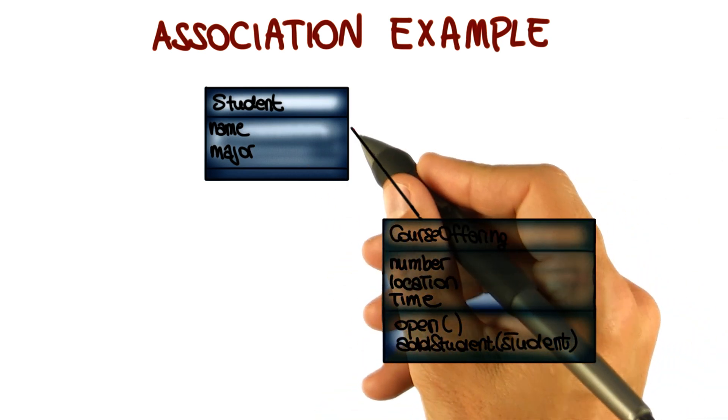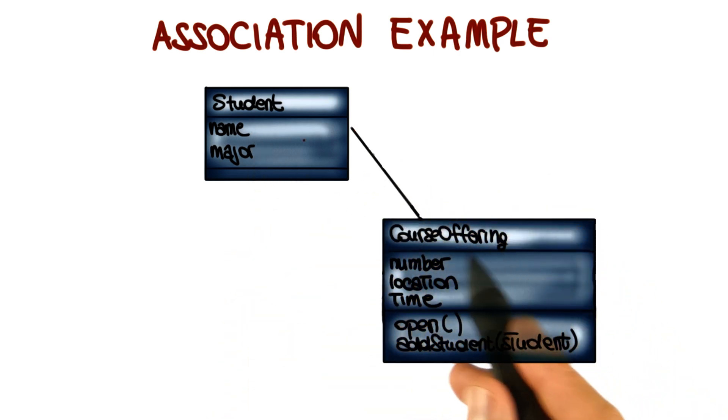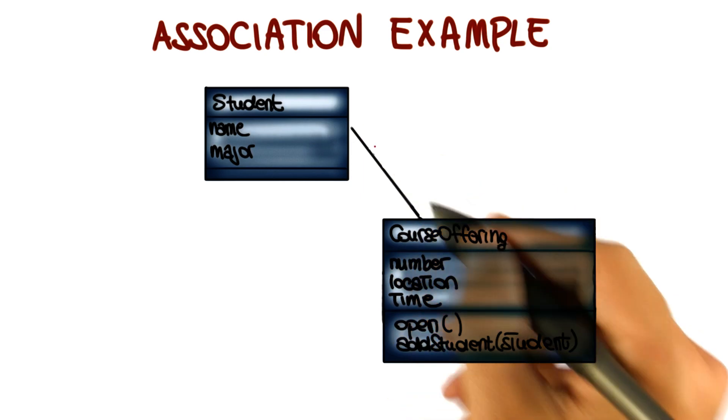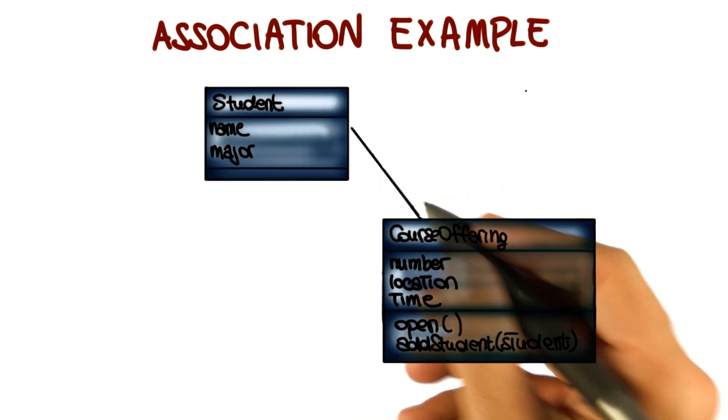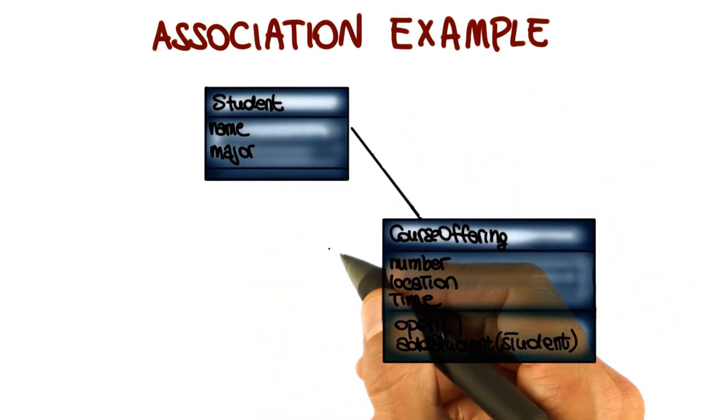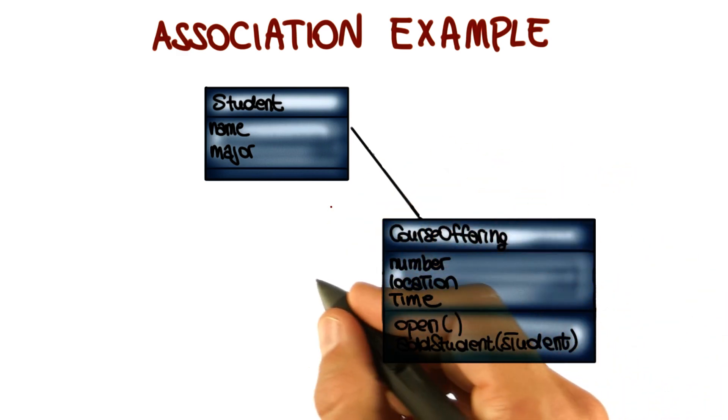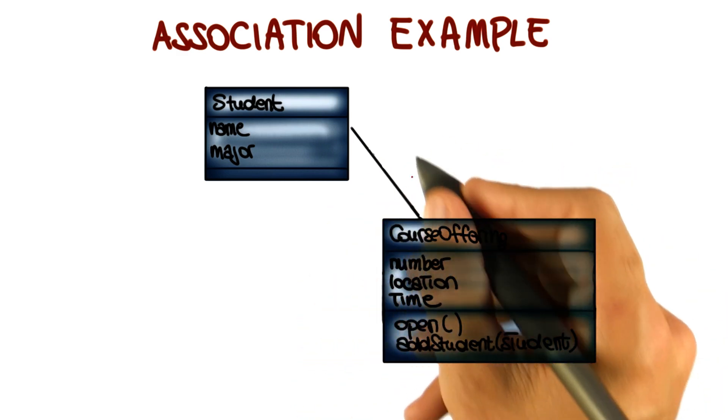To indicate this fact, we add a solid line between the Student class and the CourseOffering. The fact of having a solid line doesn't really tell us much about the nature of the relationship. So to clarify such nature, we can use what we call adornments that we can apply to associations to clarify their meaning.